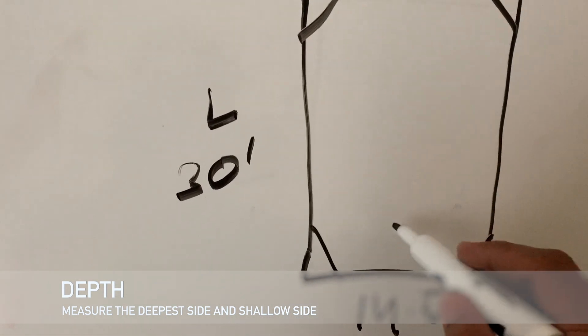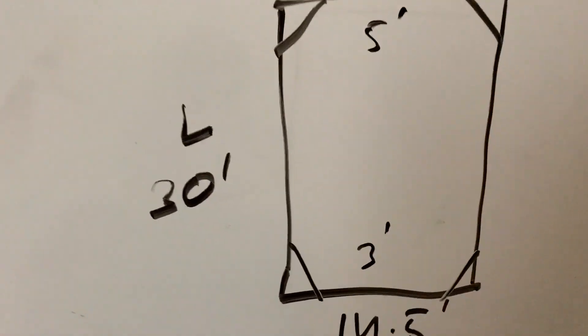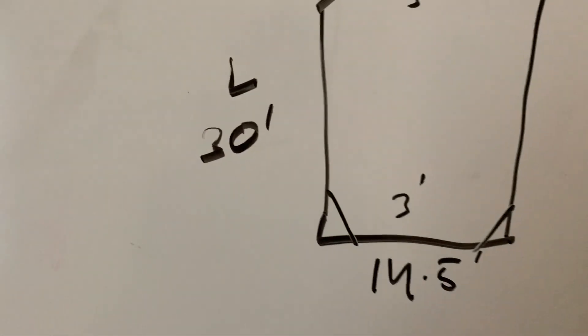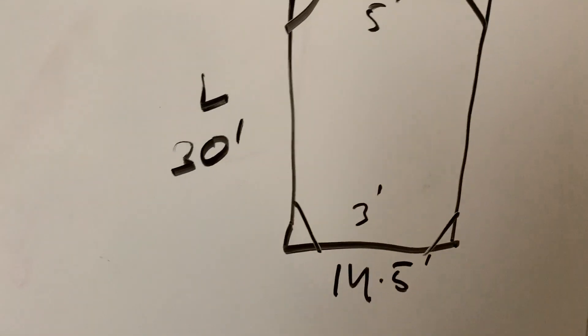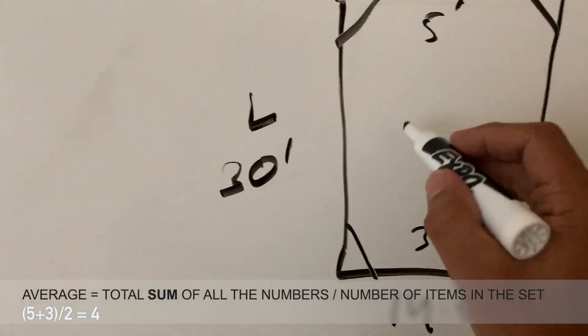The depth could vary—you may have three feet here, five feet there—so take an average of both figures. In my case, my average came out to be about 4.1 feet.